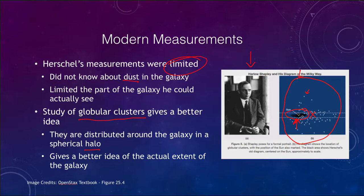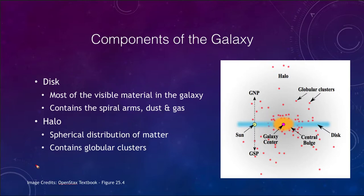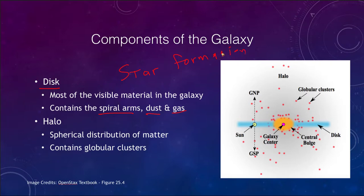Let's look at what our galaxy is made up of — its different components. We have the disk of the galaxy, which is really most of the visible material. When you look at a spiral galaxy, which is what our Milky Way is, most of that material is disk material. It contains the spiral arms, dust, and gas, and is where stars are forming — sites of active star formation. Our disk is the very flattened area going right through the central portions of the galaxy.